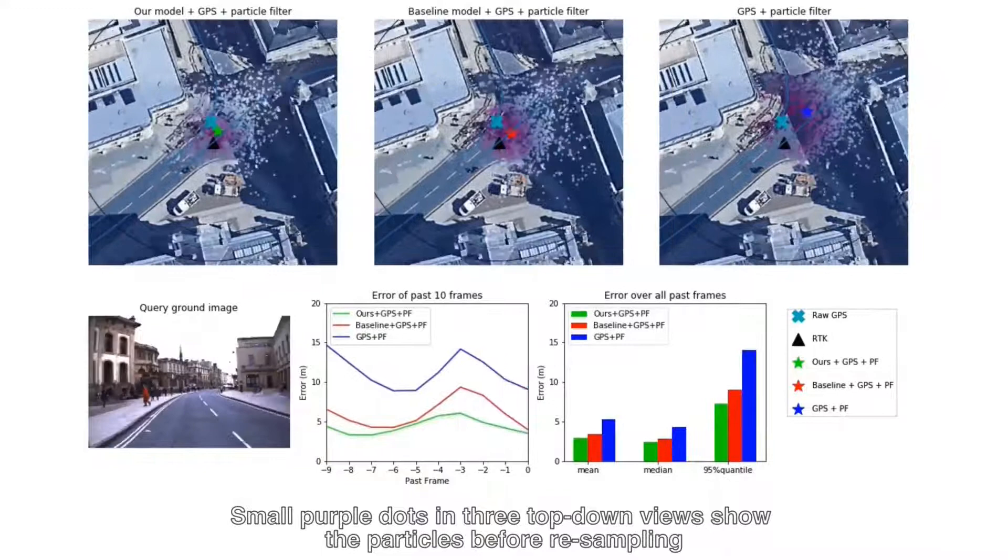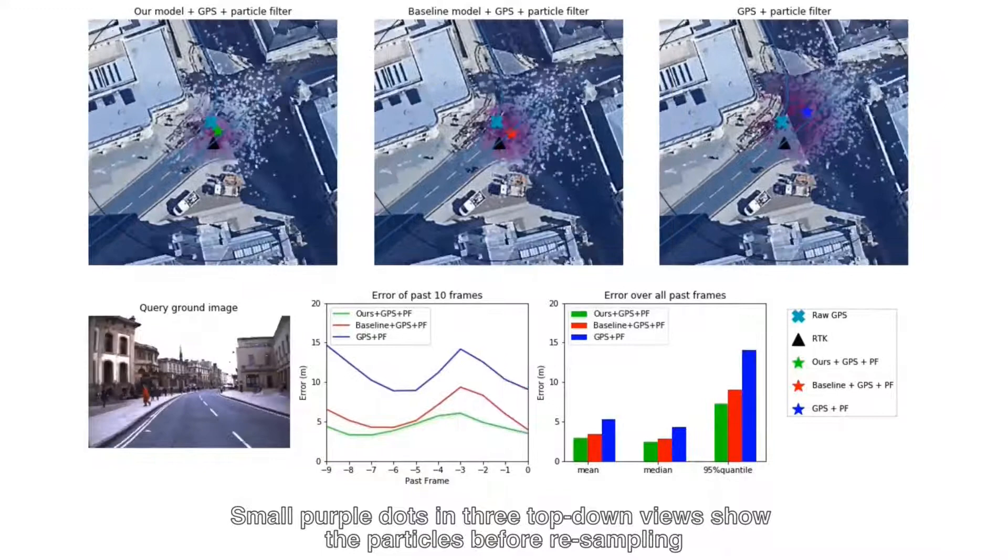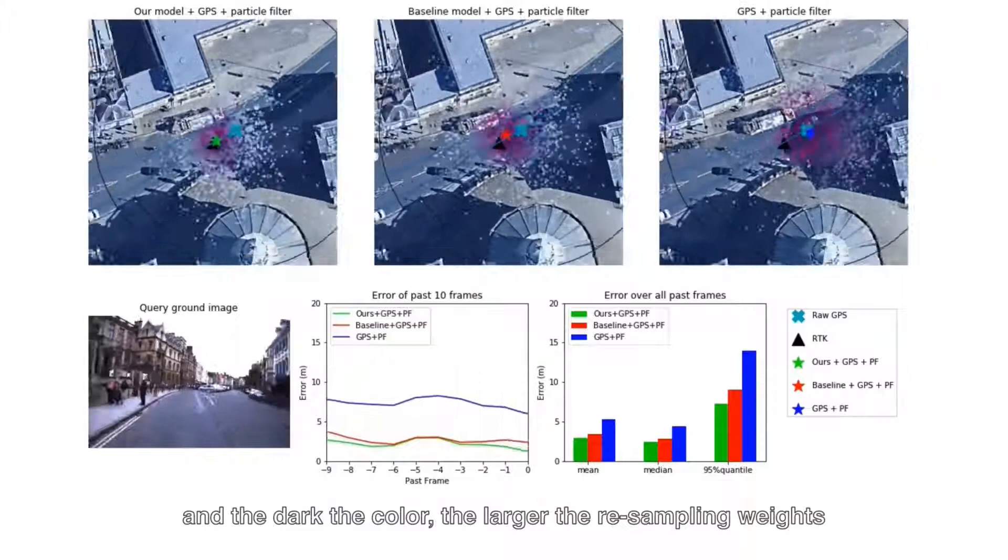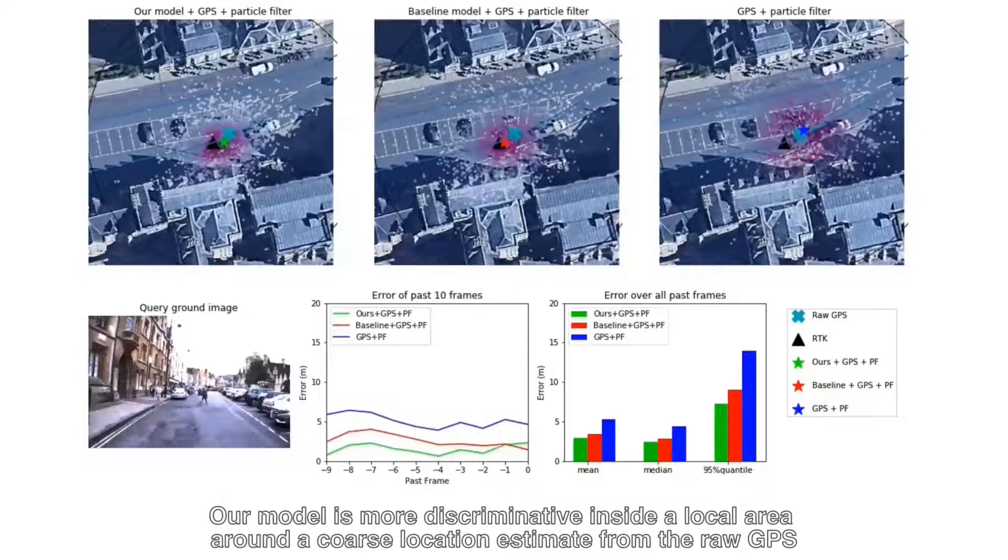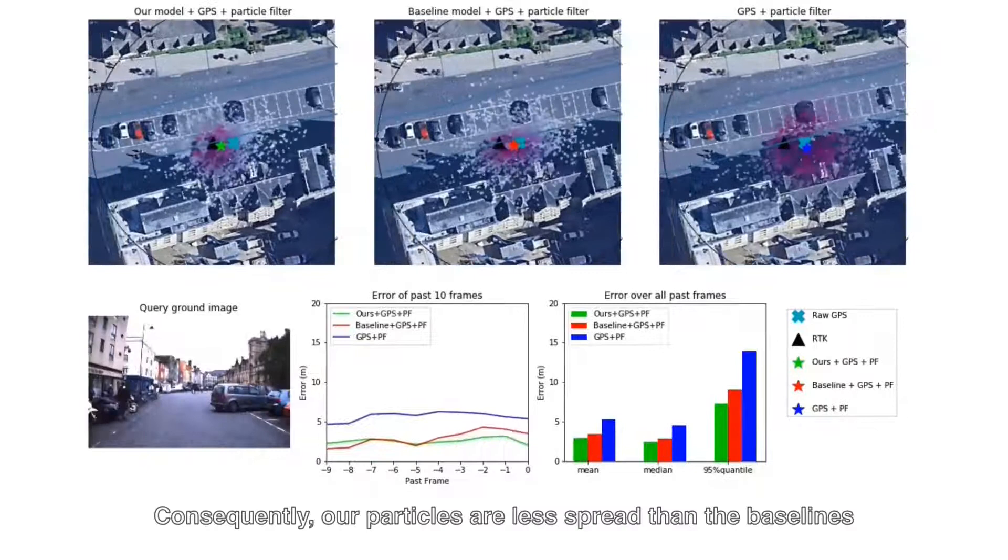Small purple dots in three top-down views show the particles before resampling, and the darker the color, the larger the resampling weight. Our model is more discriminative inside the local area around the cross location estimate from the raw GPS. Consequently, our particles are less spread than the baseline.